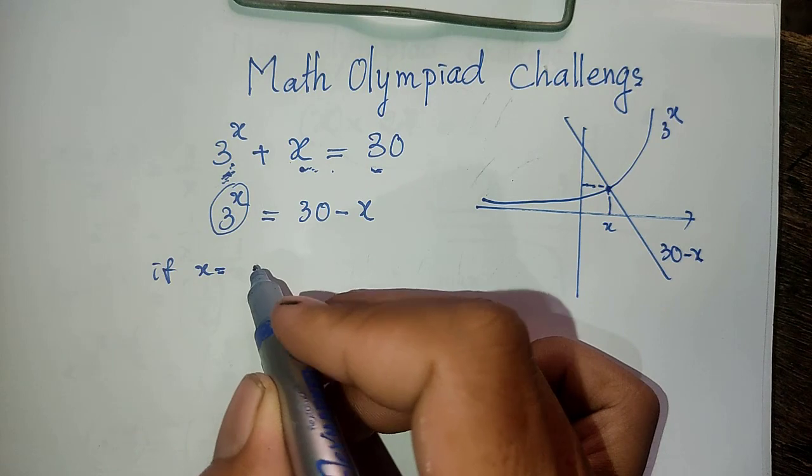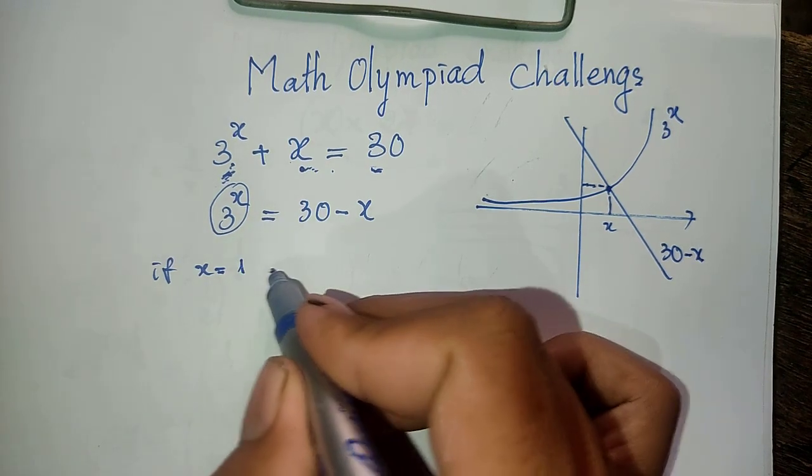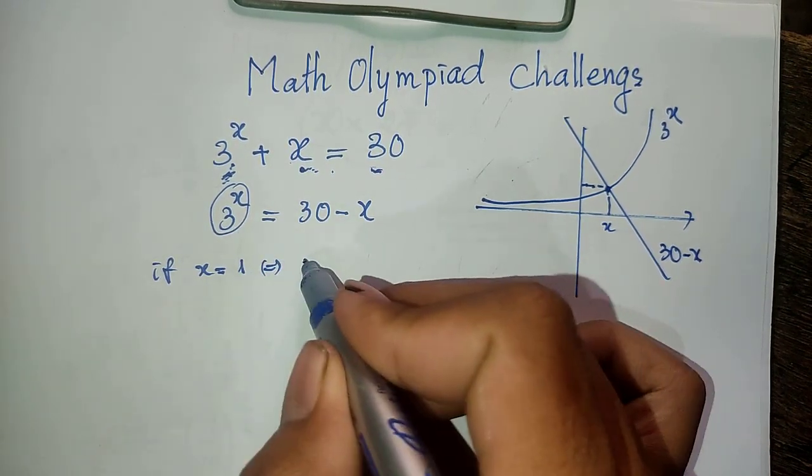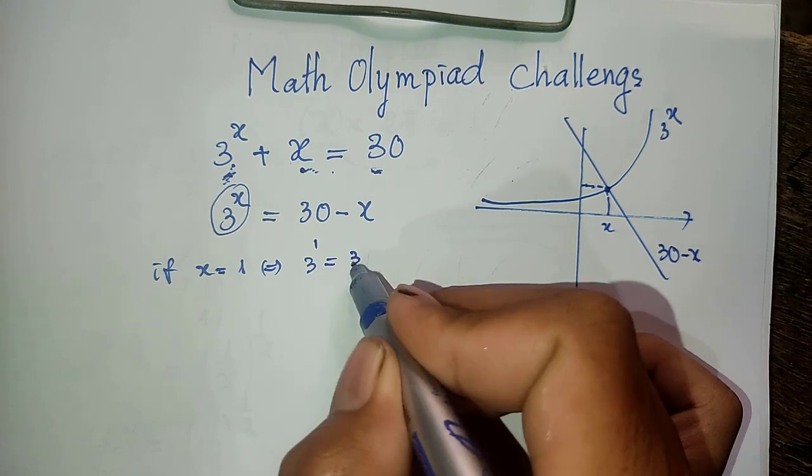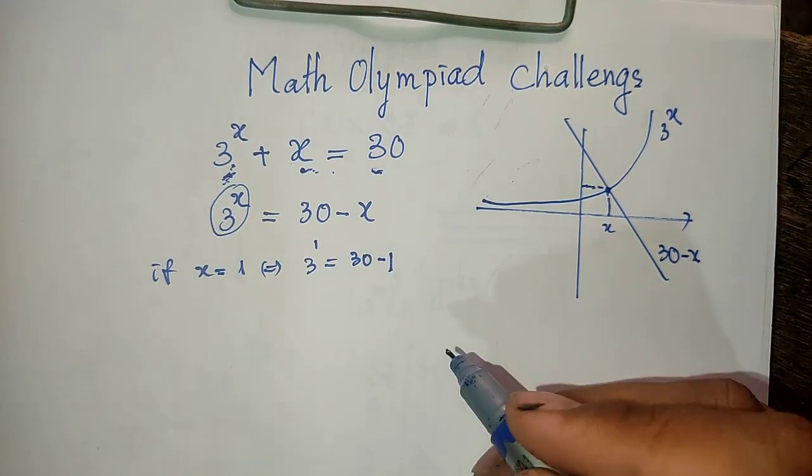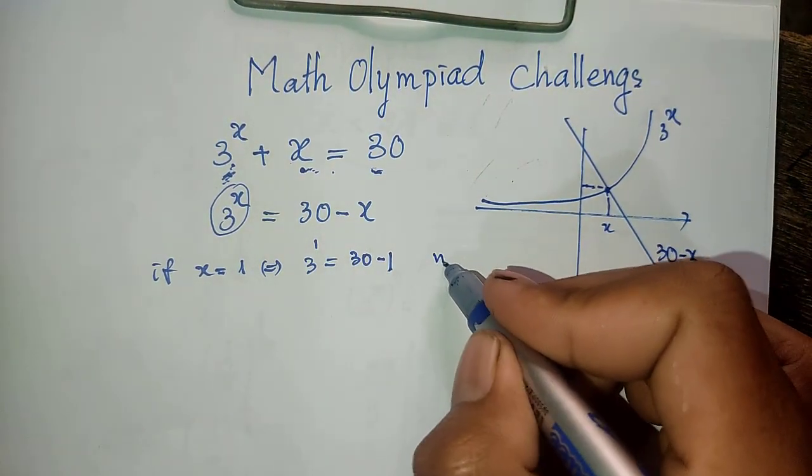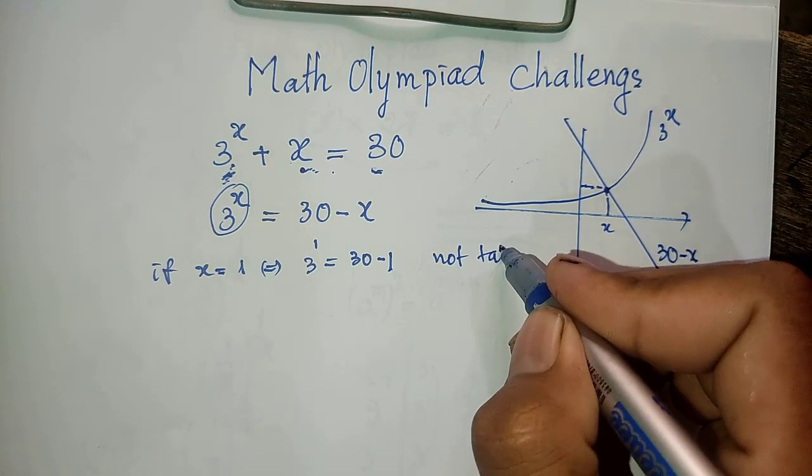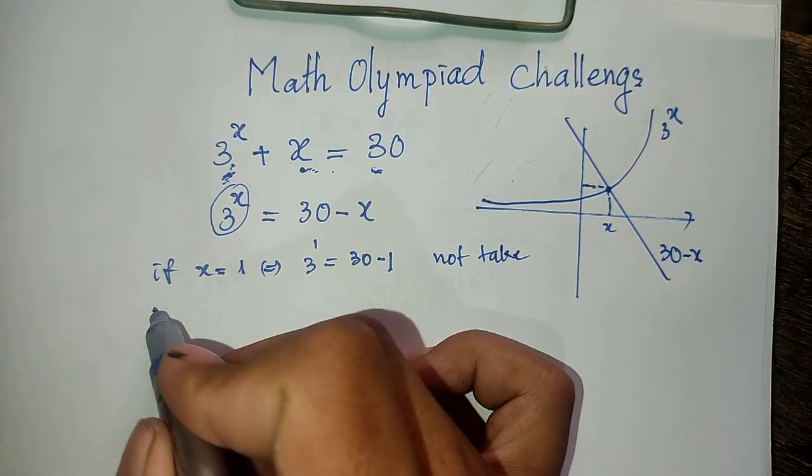If x equals 1, you get 3^1 which equals 3, and 30 minus 1 is 29, not equal, okay.